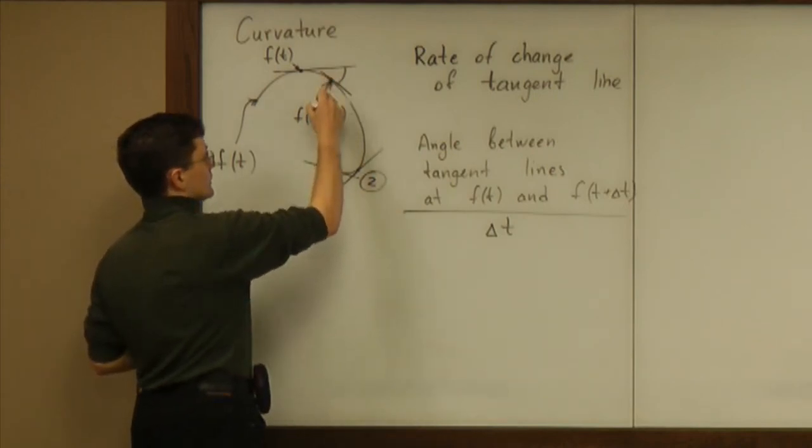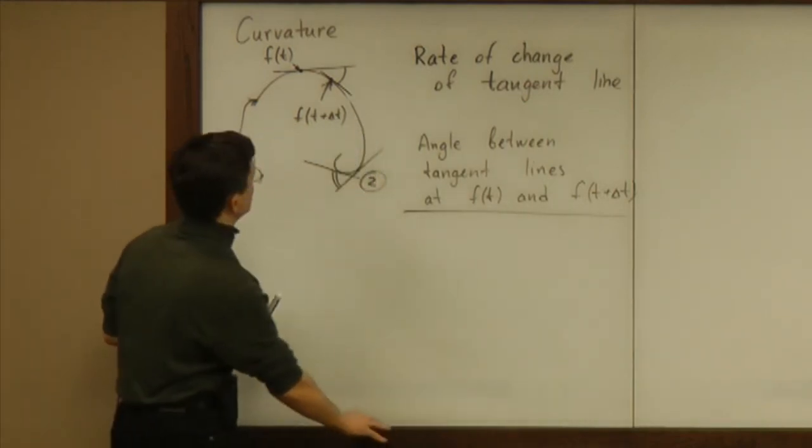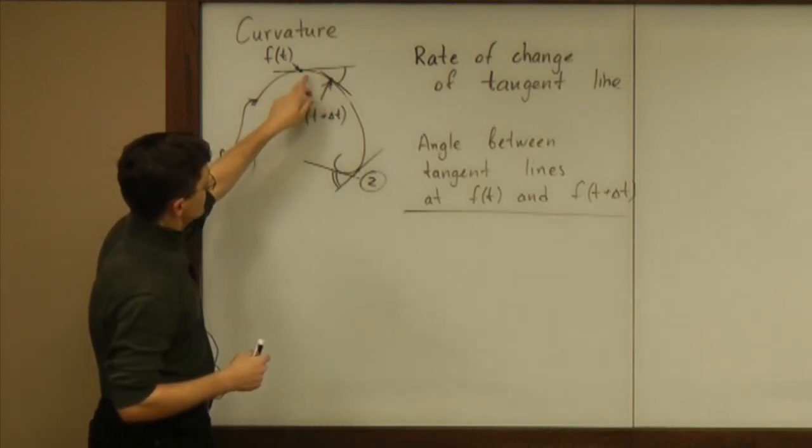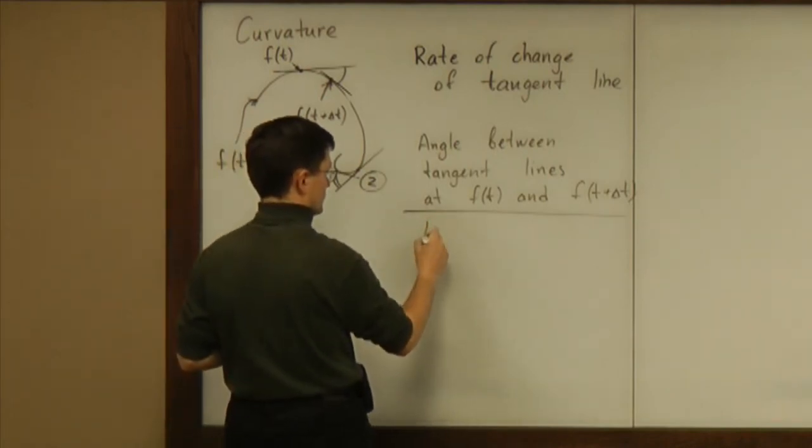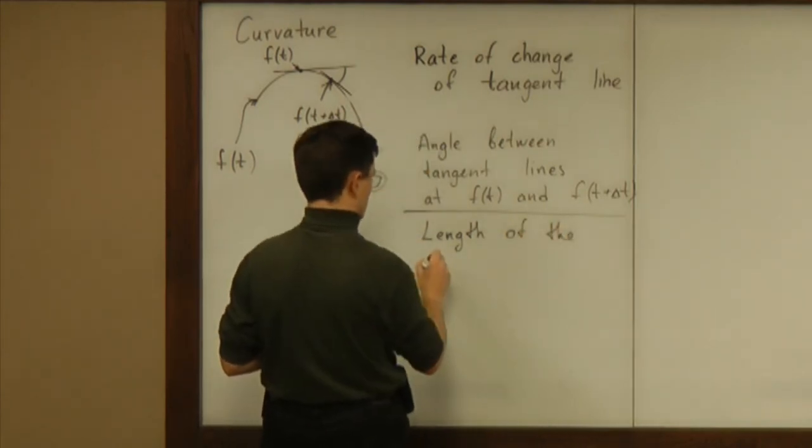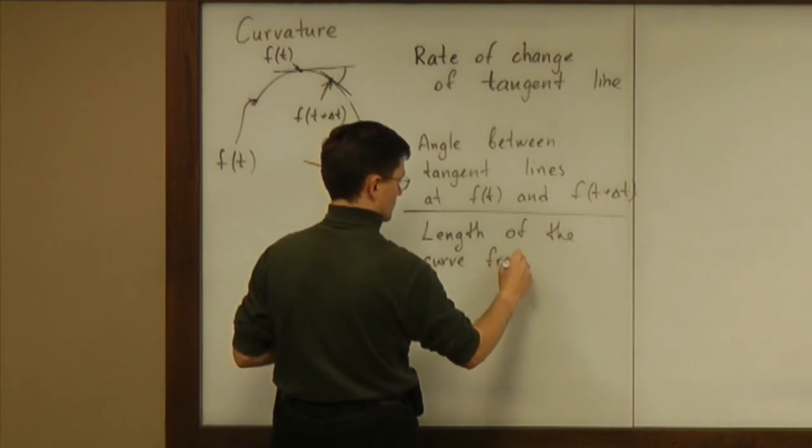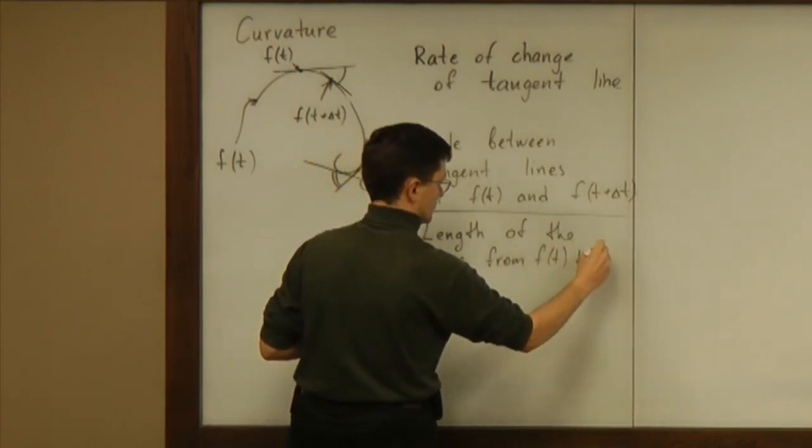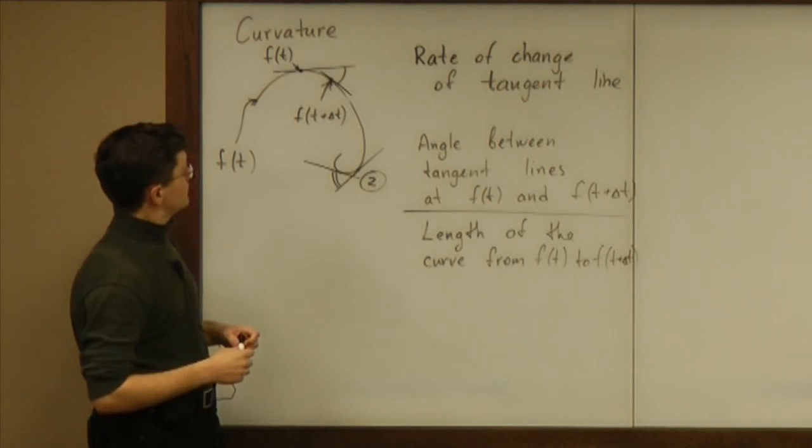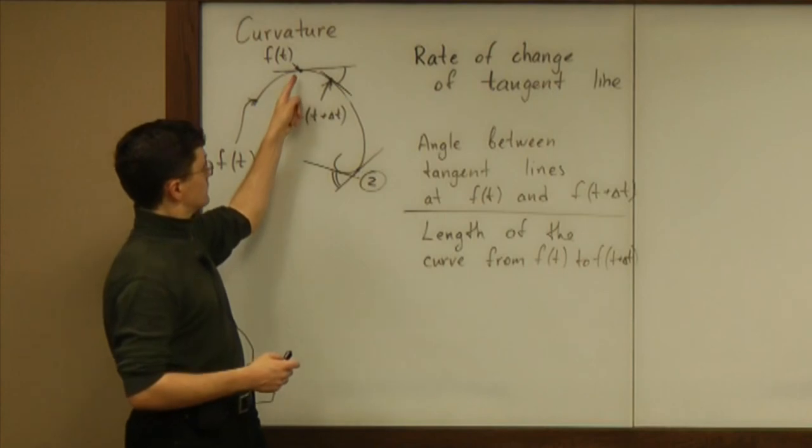Now, let's think what should we relate it to? Well, a natural guess would be to relate it to something geometric, to something that we see. And what we see is the length of this path. So, length of the curve from f of t to f of t plus delta t. Alright, so we relate the angle to the distance traveled.